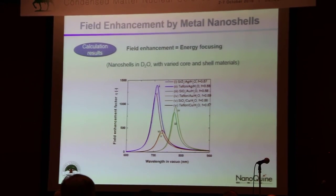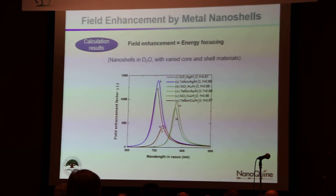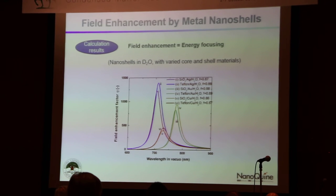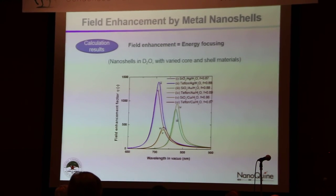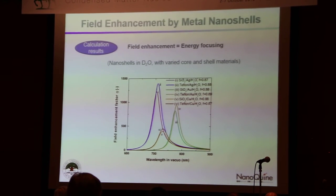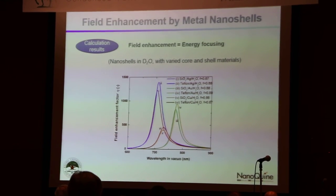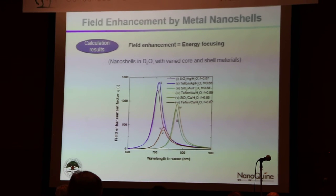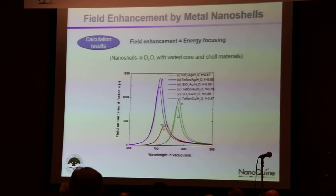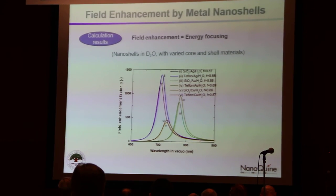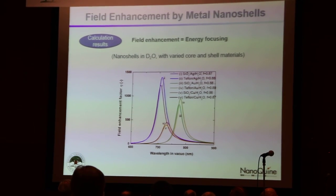The core material should be better for having a lower refractive index, such as oxide or Teflon, or if we could have a hollow type like an air core, that would be the best. The shell materials may be good by using noble metals such as silver and gold; platinum could be a little bit lower but still fine.